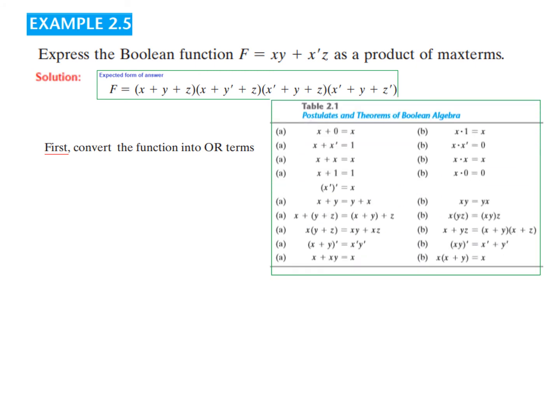Now first convert the function into OR terms, this function is not in OR terms, these are the AND terms, and then they have been ORed. For this, we will take help of this table, again. Now if you look at this, and if we take, consider this as one entity, then our this formula is applied. x + yz is equal to (x + y)(x + z). So this plus y and this plus z, same will apply here.